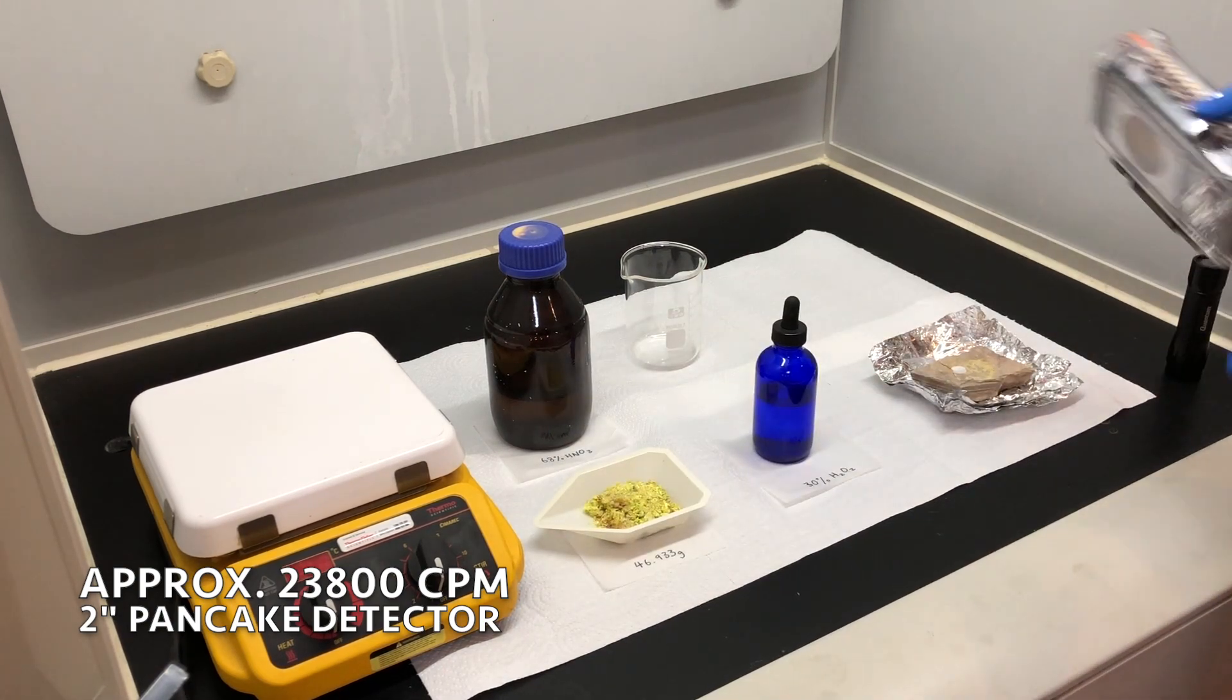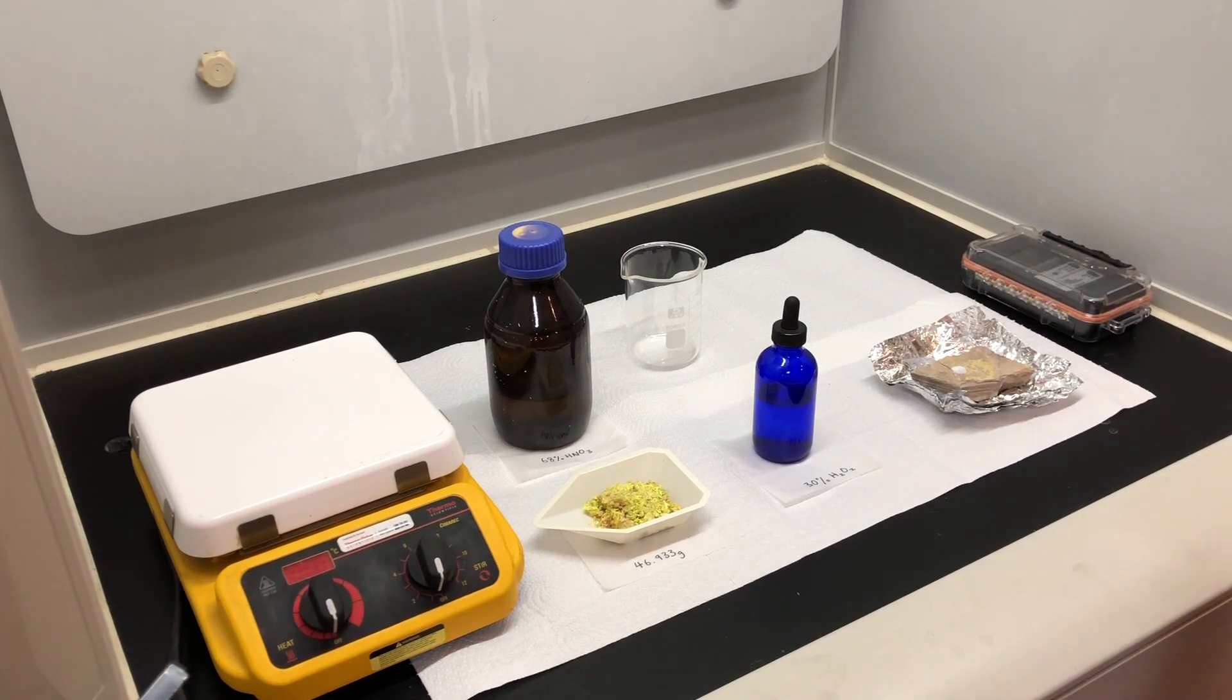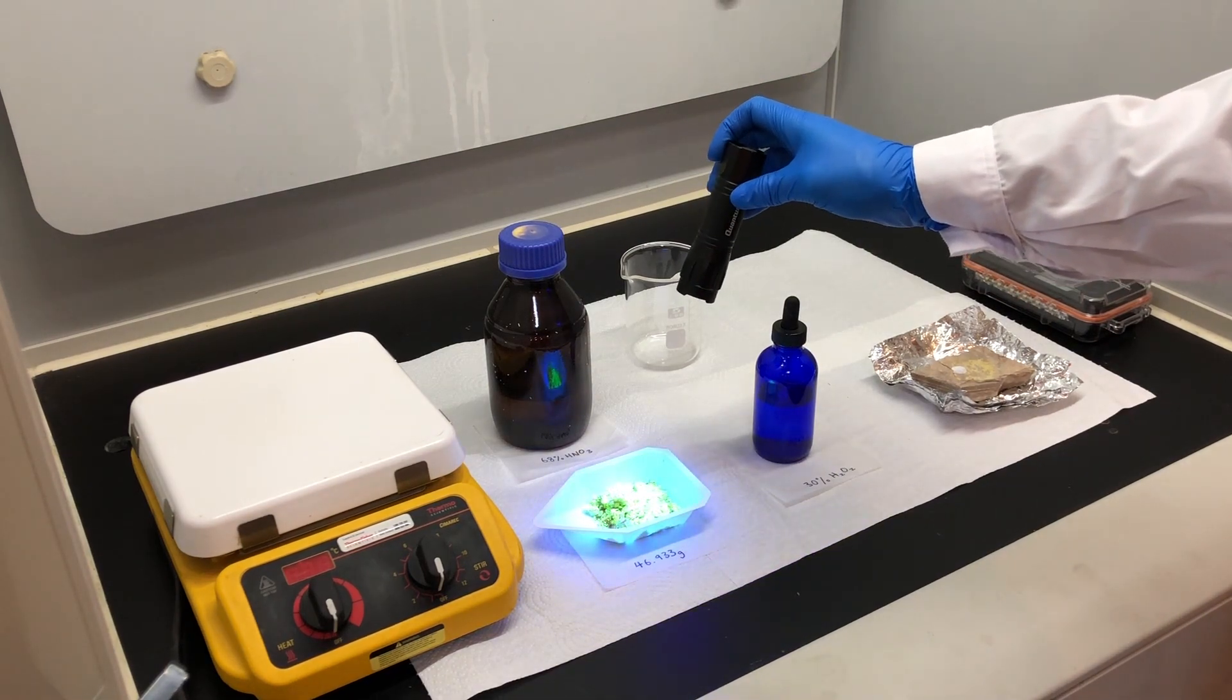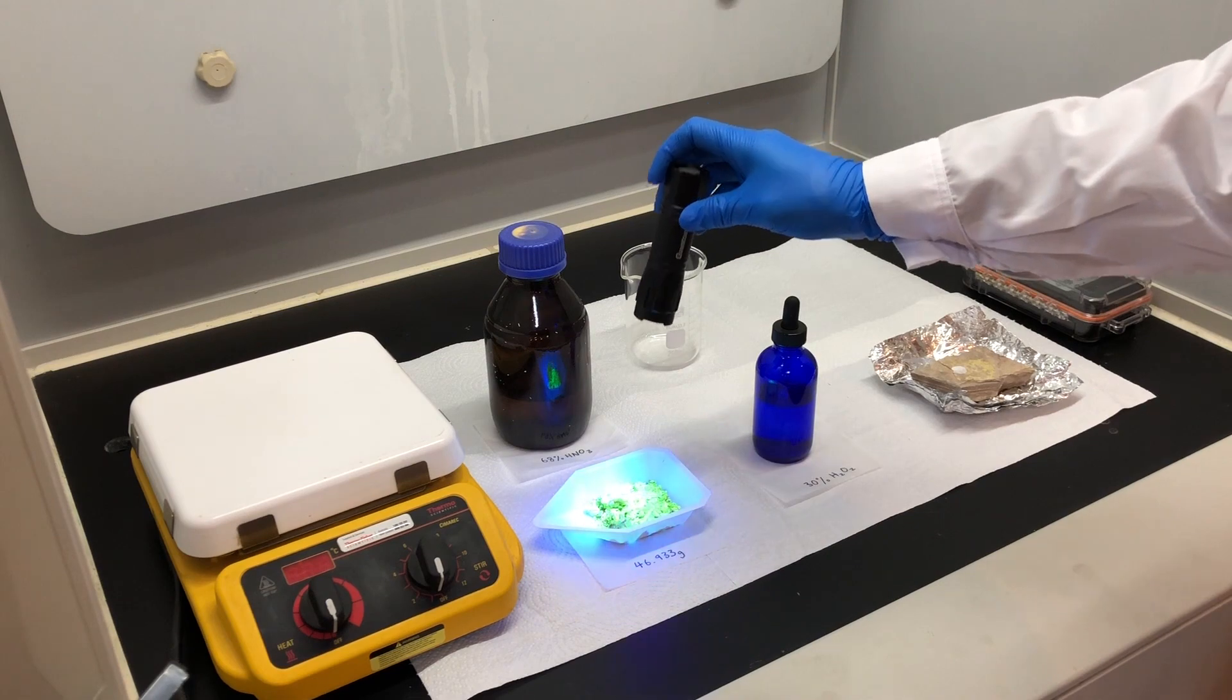Another unique property of secondary uranium ores is its fluorescence. In this particular case, you can see that by shining this ultraviolet flashlight onto it, you can see the beautiful green fluorescence that is taking place.